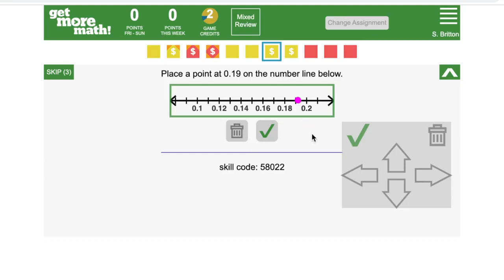That looks a little off, so I can use the arrow buttons to adjust my point's location, or I can click on the trash can to delete it and try again. When I'm happy with the location of my point, I click on the green check, and the point turns blue.